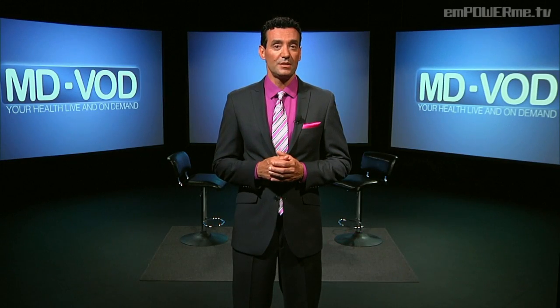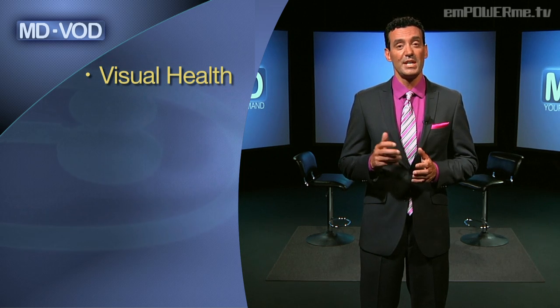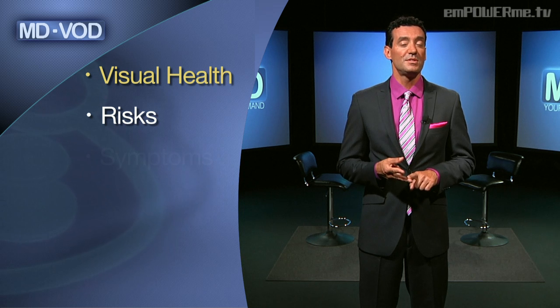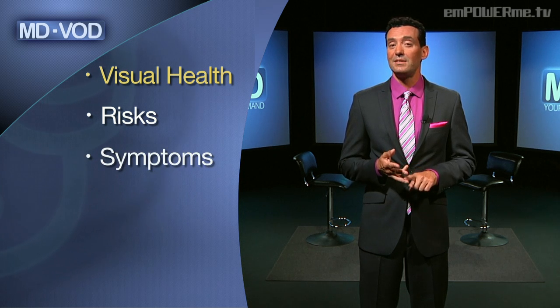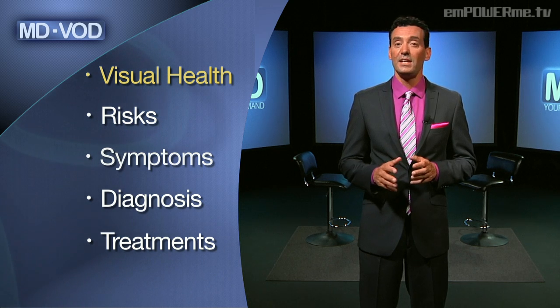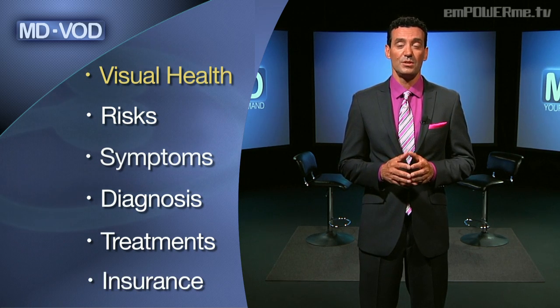As we do each week, we'll help you better understand the health of your eyes and vision. We'll first take a look at the risks of developing problems with your vision, the most common symptoms, how to make a diagnosis, and then we'll discuss treatments and therapies. Finally, we'll talk about whether insurance providers cover the costs associated with your visual health. And later today, we'll be joined by board-certified ophthalmologist Dr. Brian Boxer-Wachler, who will help arm you with information to help protect your eyes and maintain visual health.